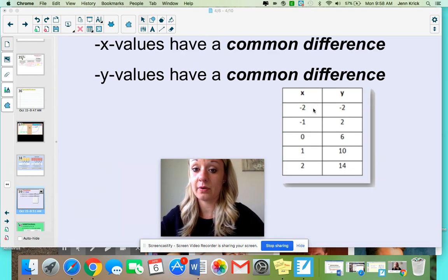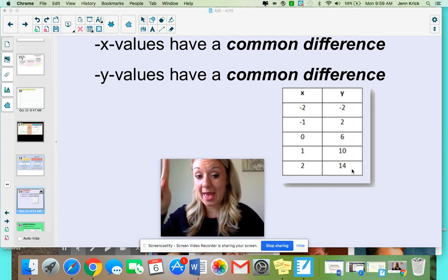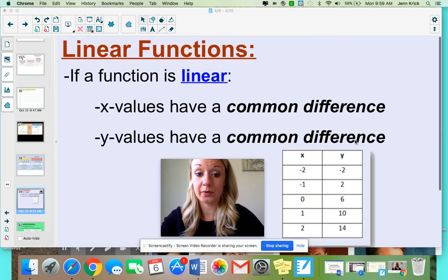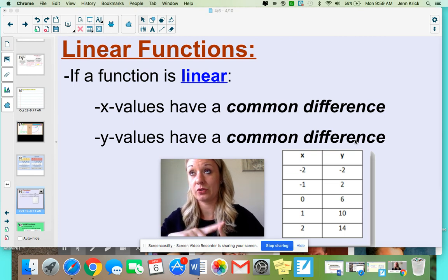So notice your x's are going up by one, one, one, one, one, all the way down. Your y's, we are adding four, add four, add four, add four. Because we're adding four to every single one, that's going to be linear. If you plotted this on a coordinate plane, it'd create a straight line.